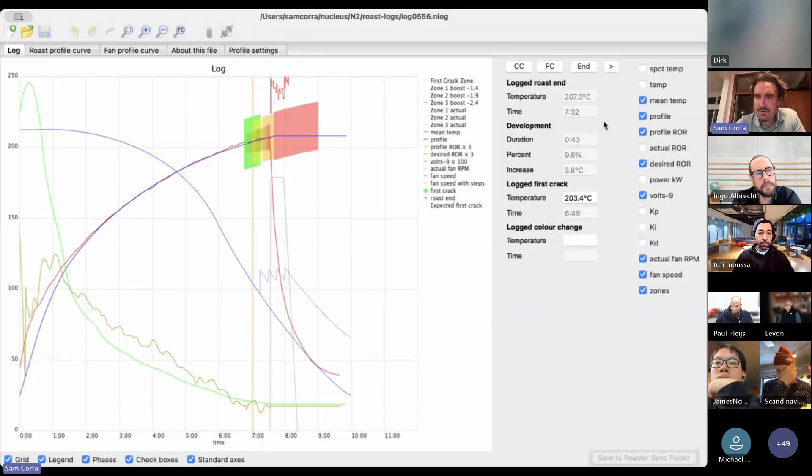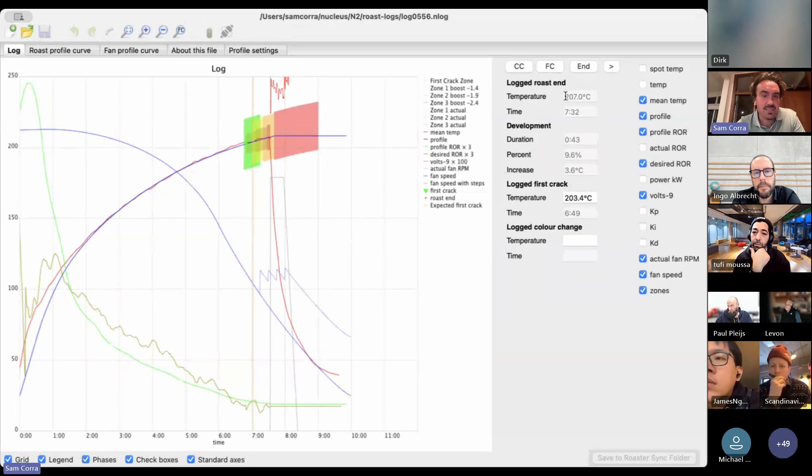The numbers that I would be focusing on are the time, the duration, the development percent, and the increase after first crack, as opposed to the exact temperatures when things are occurring because it's quite hard to have that direct translation.